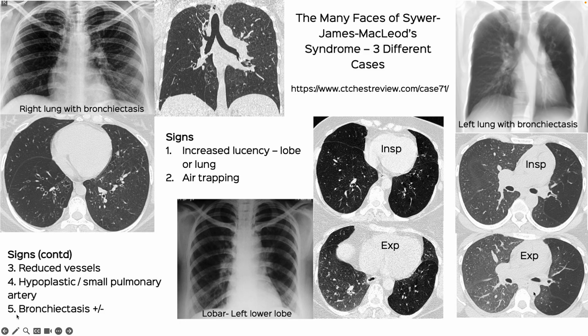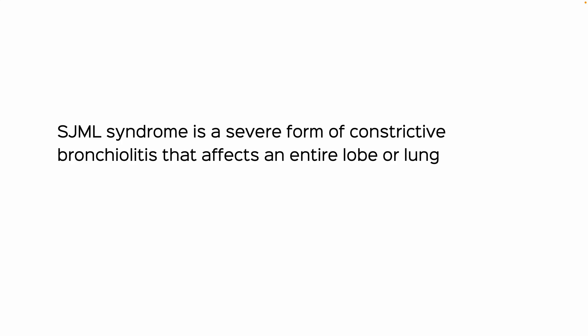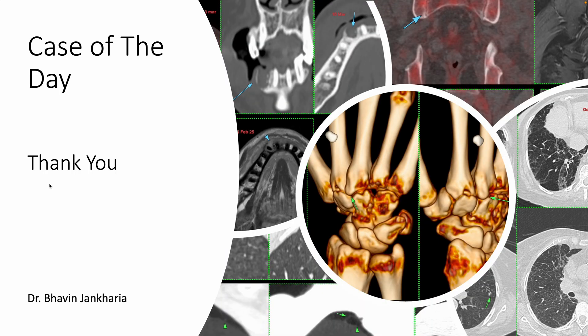These are three different Swyer-James MacLeod syndrome cases. The first is the index case. The second is one I saw almost two decades ago — you can see a very subtle small left lung on the radiograph, but on the expiratory images the left lower lobe shows increased lucency, paucity of vessels, and marked air trapping. The third patient also has increased lucency on the radiograph with marked increased lucency, paucity of vessels, and air trapping on expiratory images. It's a severe form of constrictive bronchiolitis affecting an entire lobe or lung. That's the link to my WhatsApp channel — thank you for listening and viewing, take care.